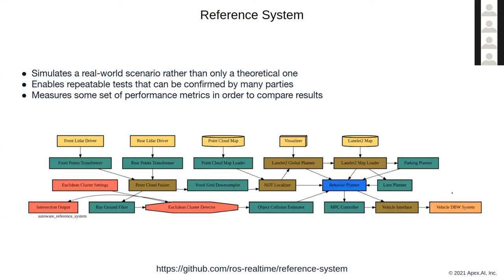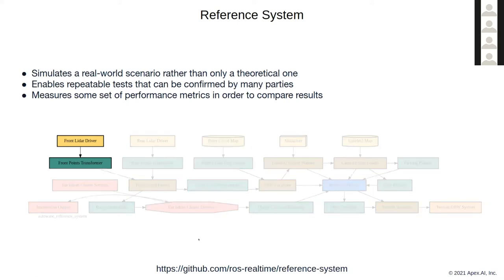You'll see this node graph many times in future talks. This is the first reference system we came up with — the Autoware reference system. It replicates a real-world scenario for an autonomous vehicle with a few lidars, map visualization, street data, and a whole bunch of different nodes doing different processing. A reference system could be defined as just two nodes — a publisher and subscriber — but you'd lose out on measuring certain things that different executors can implement.